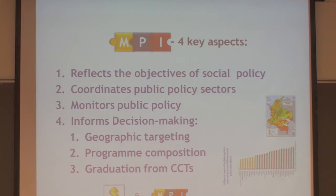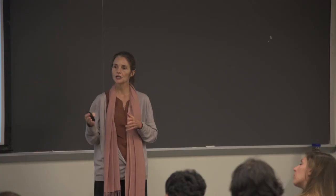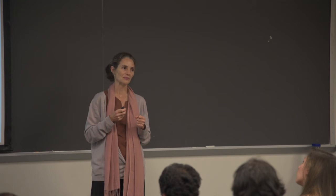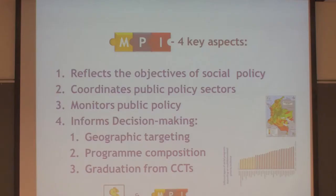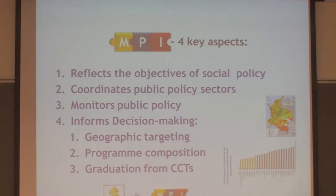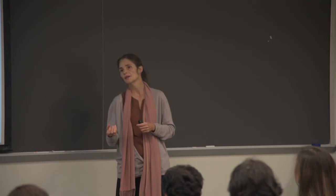The second purpose is to coordinate public policy across sectors. We already talked about how sectors sometimes don't want to talk to each other or coordinate. But this is the goal for Colombia because it is more cost-effective if the sectors collaborate. The third goal was to monitor public policy, with the president setting a specific target to reduce the MPI within a four-year time span.